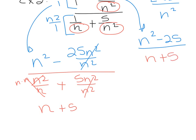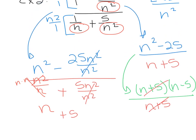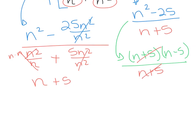Notice that N squared minus 25 is a difference of squares, so it will factor. N squared minus 25 factors as (N plus 5)(N minus 5), and the denominator is still N plus 5. These binomials match, so they reduce, and the final answer turns out to be N minus 5.